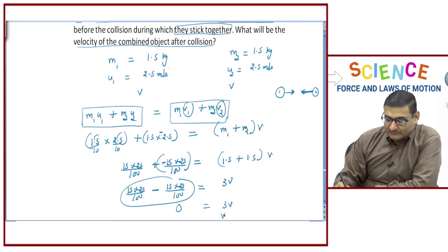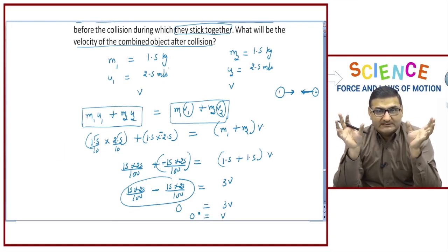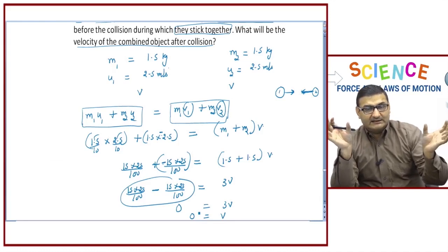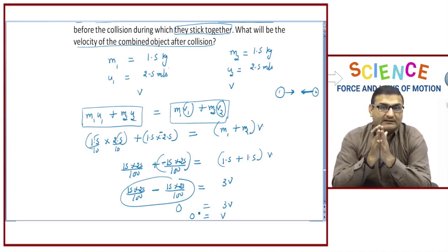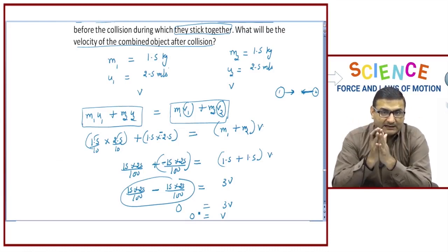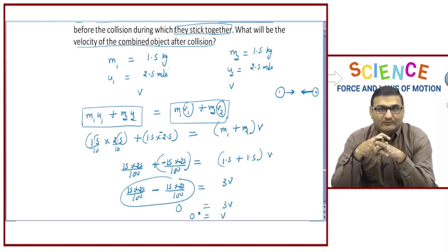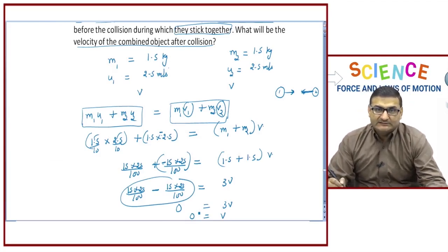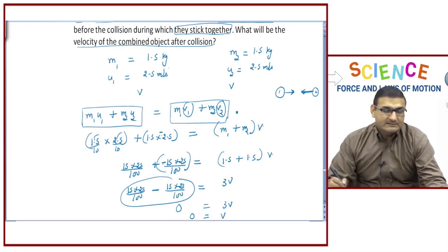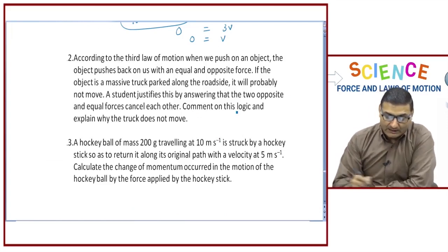Since both velocities are equal and opposite — one positive and one negative — they cancel each other out, giving 3v = 0, so v = 0. This means after collision the combined object comes to rest. The two objects colliding with equal and opposite velocities stop completely upon sticking together.